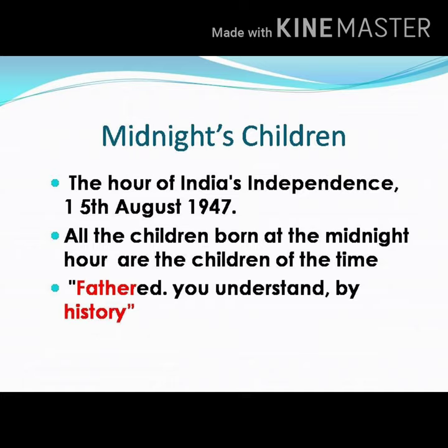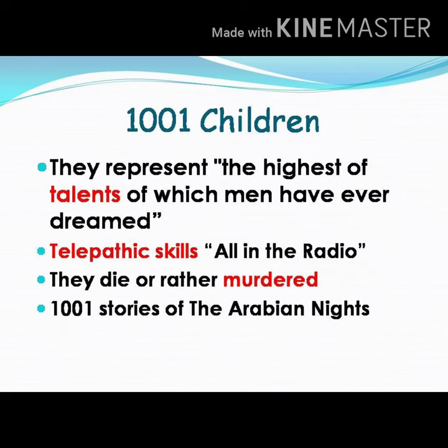This is why Salim Sinai claims that he was fathered by history. In the story, 1001 children were born on the midnight of 1947. Rushdie has selected this curious number so that his story has connections with the Arabian Nights.